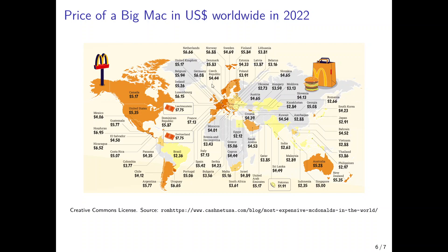Looking at Big Mac prices in US dollars for the year 2022: taking the United States as a benchmark, a Big Mac cost $5.35. In India it only cost $2.63, indicating that the rupee is undervalued. By contrast, in Liechtenstein the Big Mac costs $7.75, indicating that the currency is overvalued. So there is a departure from purchasing power parity upwards in Liechtenstein and downwards in India compared to the United States.